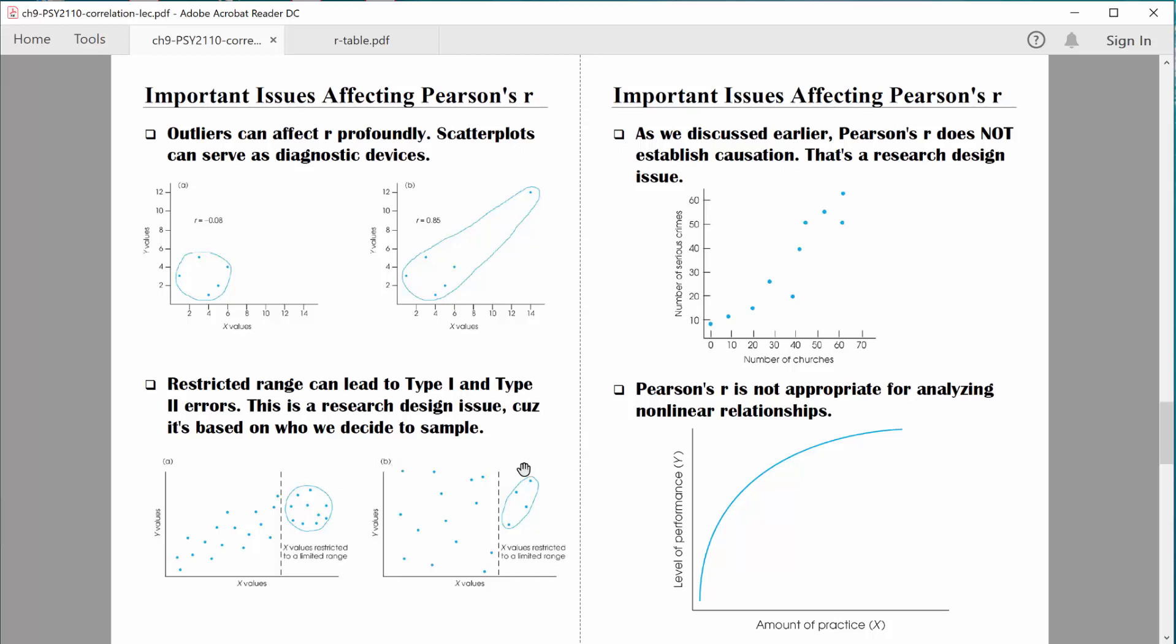Of course, the opposite type of thing could occur as well. If I'm studying and measuring just a restricted range from that population, I might find a relationship among those people. But if I were to measure the entire population, there might not be any pattern to the results at all. There might not be any relationship between the two variables. So that would be a type one error. I'd be saying a relationship exists across the entire population, and I would be wrong.